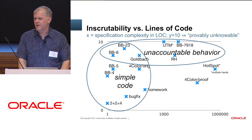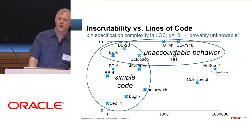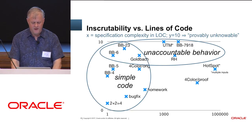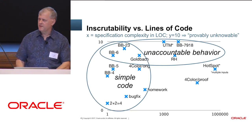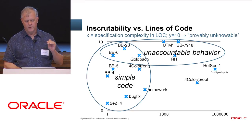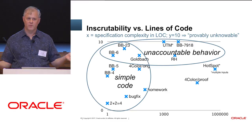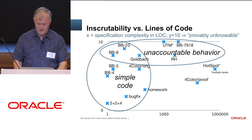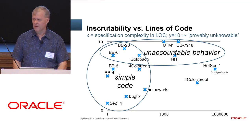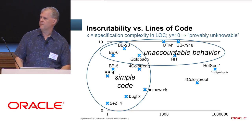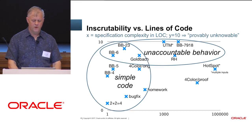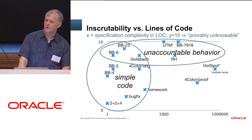Because it was interesting to me, I grabbed some hard problems and graphed them against the number of lines of code it took to express them. Way down at the bottom left is two plus two equals four. HotSpot has a lot of lines of code and it's about two-thirds of the way up the complexity spectrum. Both scales are logarithmic. Simple code is on the left; unaccountable behavior is up top. An abstraction is where you have a true account of a subset of behavior, but if you have unaccountable behavior, it's not abstractable.